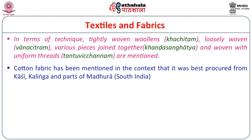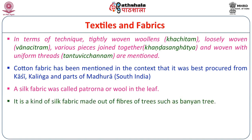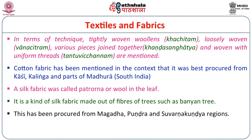Cotton fabric was best procured from Kasi or Varanasi. Varanasi is now very famous for the Varanasi silk sarees, but cotton is also very famous. Kalinga, present in Odisha, and parts of Madhura in South India were also important. A silk fabric was called Patrona, a kind of silk fabric made out of fibres of trees such as the Banyan tree. These kinds of fabrics were actually procured from Magadha, Punra and Suvarna Kundia regions. Silks from China are described as Kaushiya or Chinapatta.